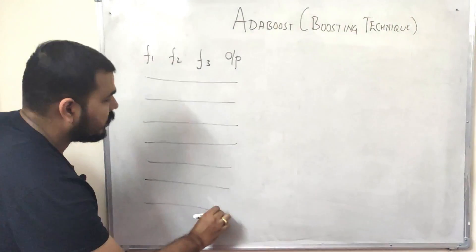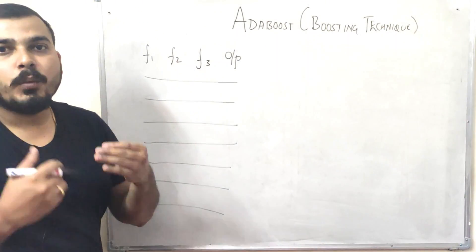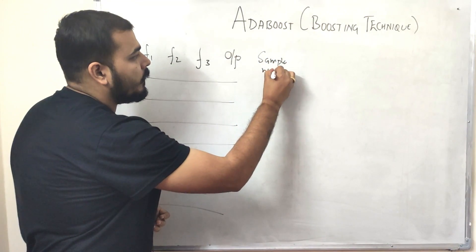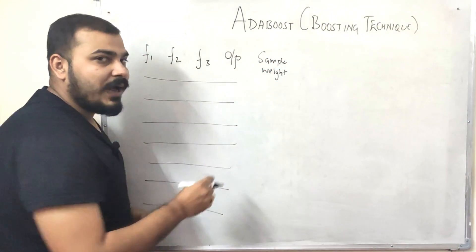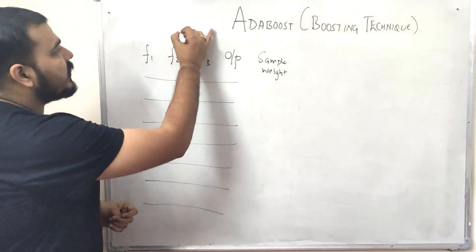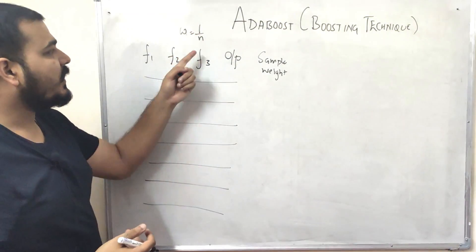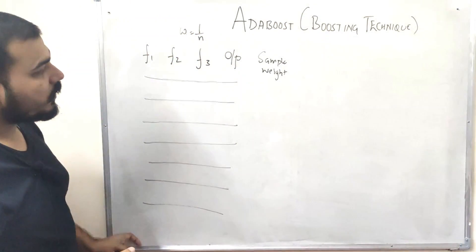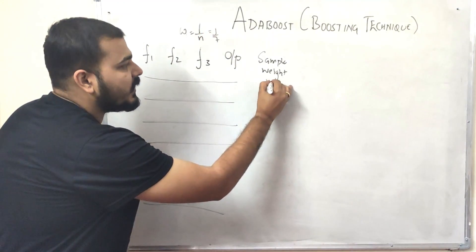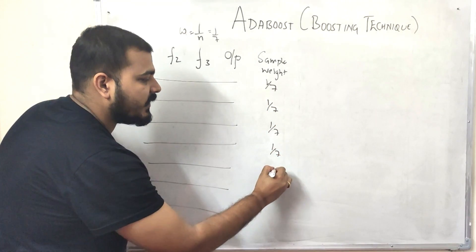In the first step, all records will get a sample weight. I am going to create another column called sample weight. To assign the initial sample weight, the formula applied is W = 1/N, where N is the number of records. Since we have seven records, W = 1/7. Initially all the records are assigned the same weight.